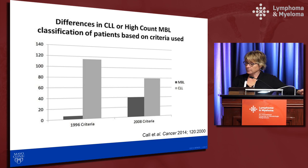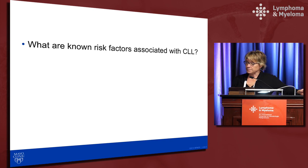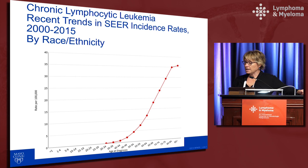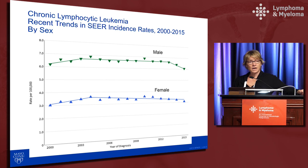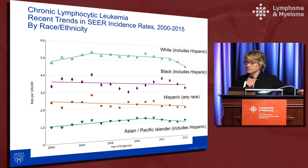Other known risk factors associated with CLL: age is certainly a risk factor — people under the age of 30 virtually do not have CLL, and the median age of onset is 71 years. Sex is another risk factor; males consistently have a higher incidence than females. Ethnicity also matters: based on the SEER registry, CLL incidence is higher in Caucasians than in Blacks, Hispanics, and Asians.